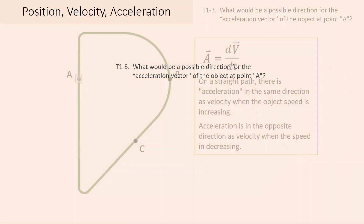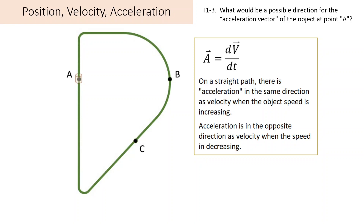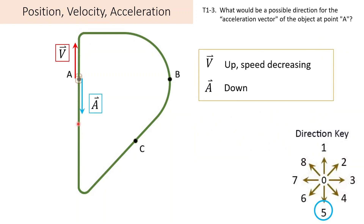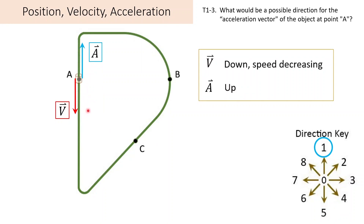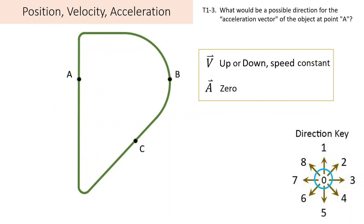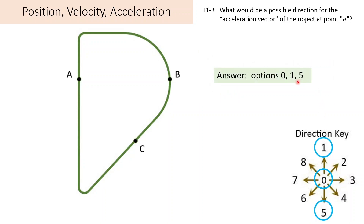Now how about acceleration? On a straight path, there is acceleration in the same direction as velocity if we're speeding up, and the acceleration would be in the opposite direction if we were slowing down. We could have been on the way up but our speed decreasing, so acceleration down — number 5. We could have been on the way down and increasing our speed — still acceleration down, 5. We could be on the way down but slowing down, so acceleration up — number 1. And there's also an option to have no acceleration if we're completely at rest or moving at a constant speed. So our choices were 0, 1, or 5.